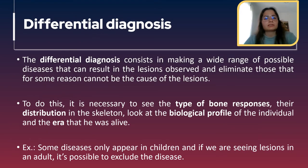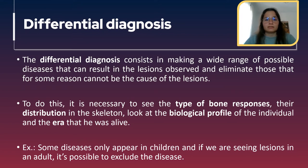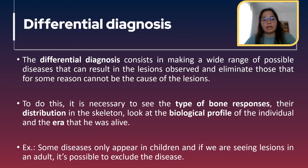Before we start looking at lesions, there are two key concepts in paleopathology. The first is differential diagnosis, which consists of making a wide range of possible diseases that can result in the lesions observed, and eliminating those that for some reason cannot be the cause. To do this, it's necessary to see the type of bone responses, their distribution in the skeleton, the biological profile of the individual, and the era they were alive. For example, if one disease only appears in children and we are analyzing an adult, we can exclude that disease.